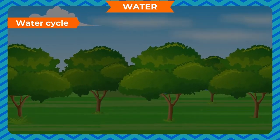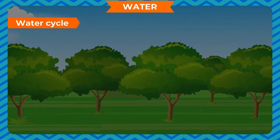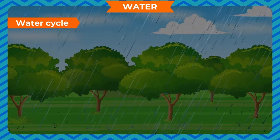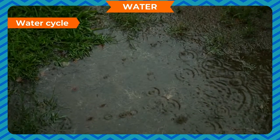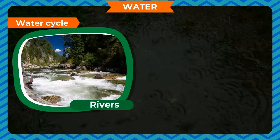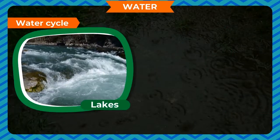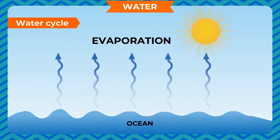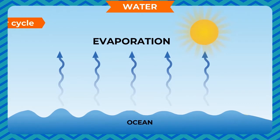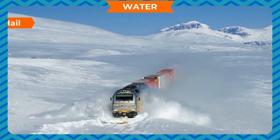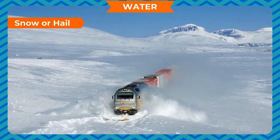When these clouds pass through even more cool air, the water drops become big and heavy. These heavy and big water drops come down to the earth in the form of rain. Some part of the rainwater seeps under the ground while most flows and fills rivers, ponds, lakes and seas. This water is again evaporated by the heat of the sun. This process continues and is known as the water cycle.